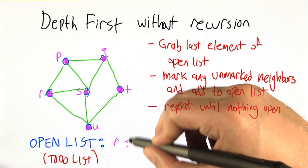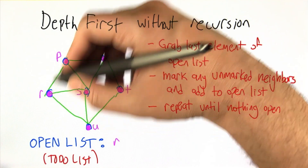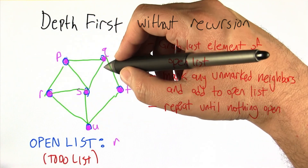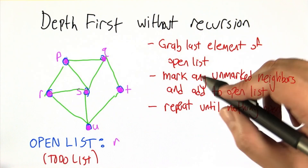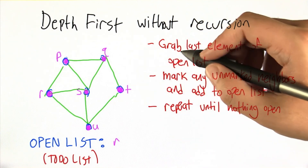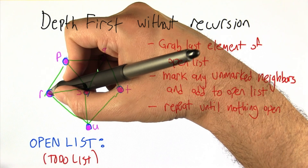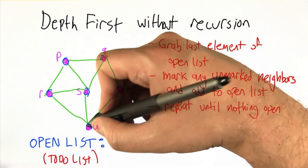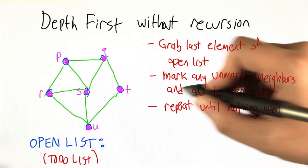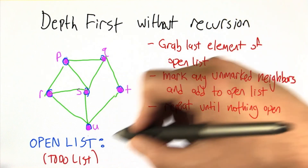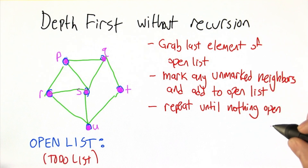There's still one more thing on the to-do list: S. Take S off the list, check all the neighbors of S — U, R, P, Q. They've all been visited, so we don't add anything new. We finish that iteration, go back to the top. One more thing on the to-do list: R. Check R — it has three neighbors, P, S, and U, all of them marked. We add nothing to the open list. We see that there's nothing left open and now we're really done.